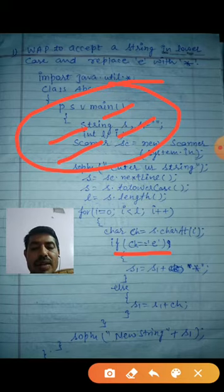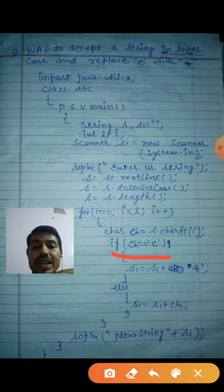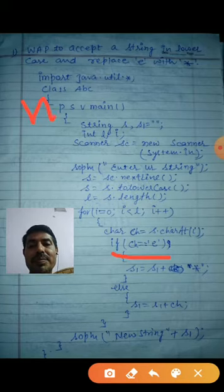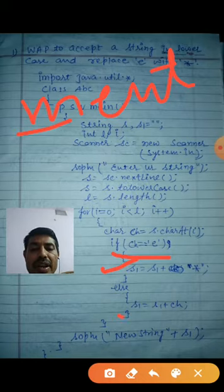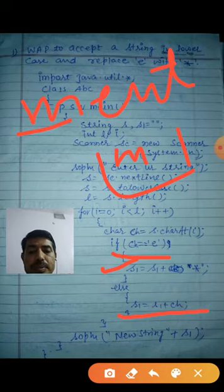With number and character you can use equals to. That is why I have written here equals to. ch equals to single quote e. E is a character. If both are equal then what will happen? But m-e-n-t, first one is what? M. So it will not come in this one. It will go here. s1 is what? Here blank. Here what will happen? s1 plus ch. What is in ch? M. So m will come here.